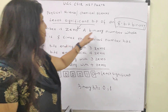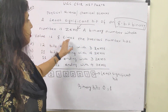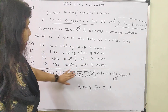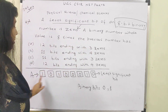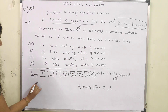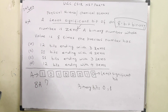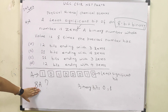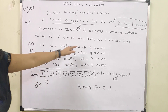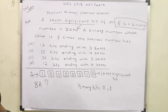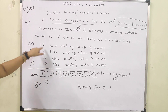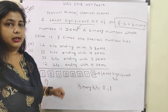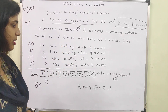A binary number whose value is 8 times the previous number A — means we need to find 8 times A. Then how will 8A appear? The options say 12 bits ending with 3 zeros, 11 bits ending with 4 zeros, and so on. So A is assumed and 8A has to be calculated.